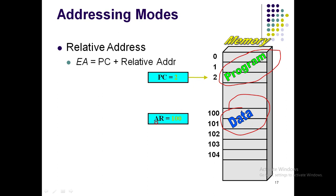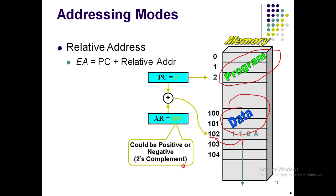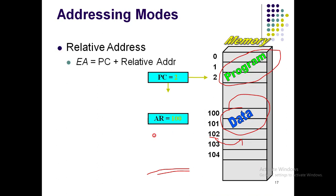For example, if the value of PC is 2 and the relative address is 100, they are added to generate the new effective address 102. Inside address 102 you will have the operand used for the rest of the operation. The relative address AR could be either positive or negative — that is, it could be a signed or unsigned number. So PC gets added with AR, generating the effective address, which points to the new address location from where the operand is fetched.